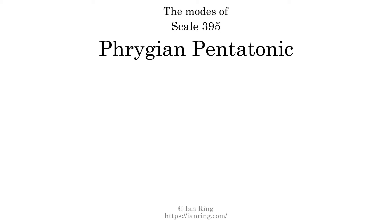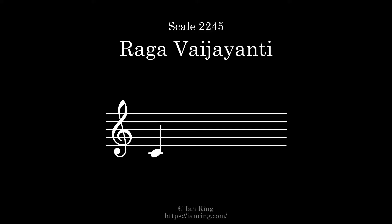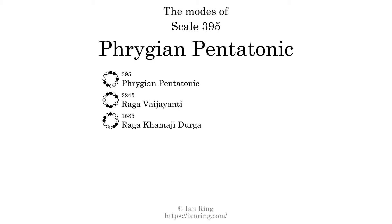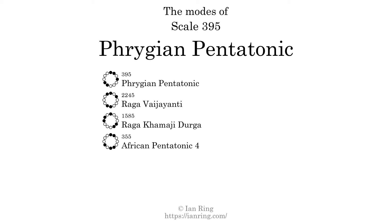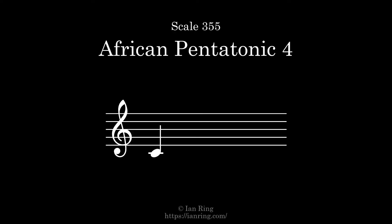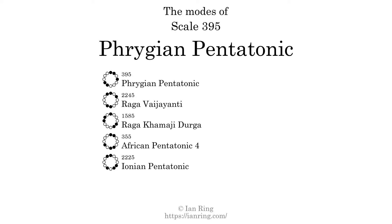Here is a Hamiltonian path of parsimonious voice leading that uses all the triads. This scale has 5 modes. The first mode is itself. The second mode is scale 2245, also known as Raga Vajayanti. The third mode is scale 1585, also known as Raga Kamaji Juga. The fourth mode is scale 255, also known as African Pentatonic 4. The fifth and last mode is scale 2225, also known as Ionian Pentatonic.